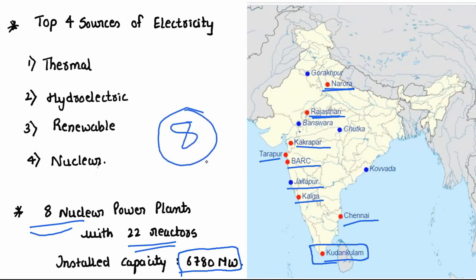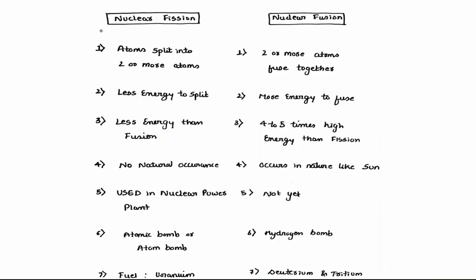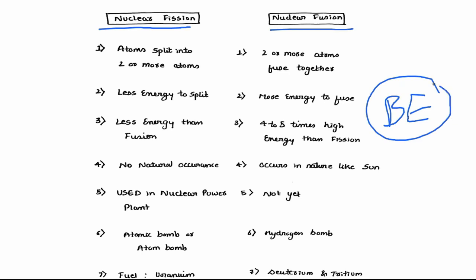Totally eight power plants are active, with 22 reactors in total. To understand the difference between nuclear fission and nuclear fusion, we need to understand what is binding energy. Binding energy is the energy with which atoms are held together. More binding energy means the atoms are more stable.